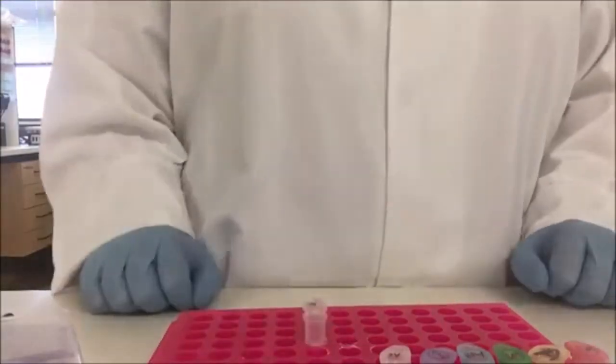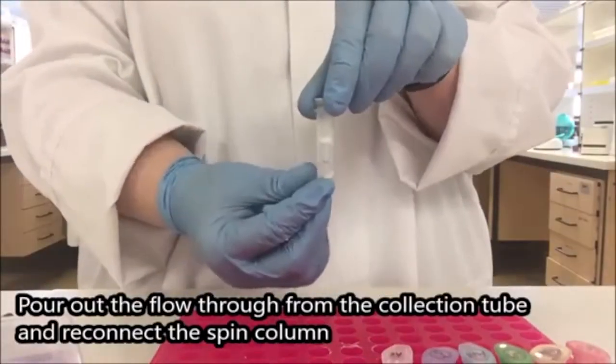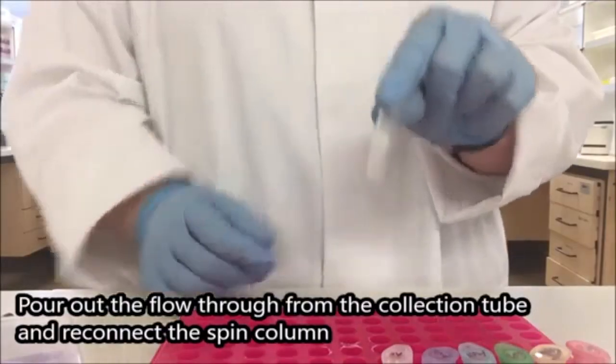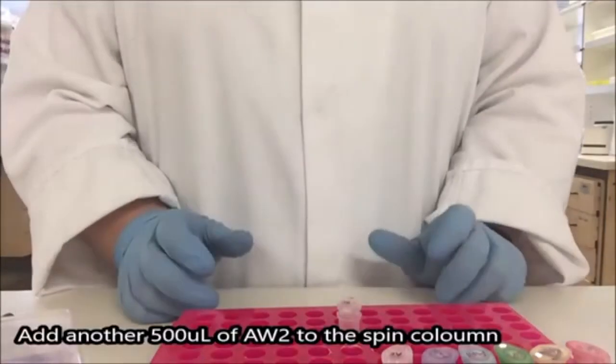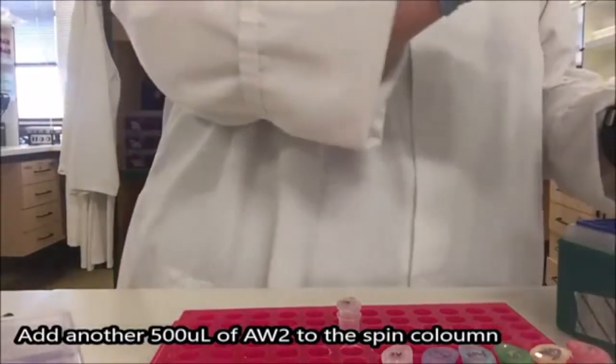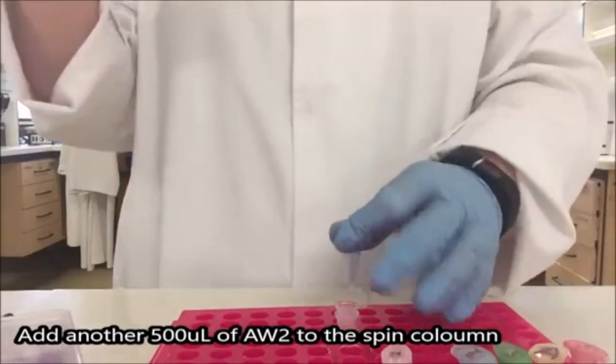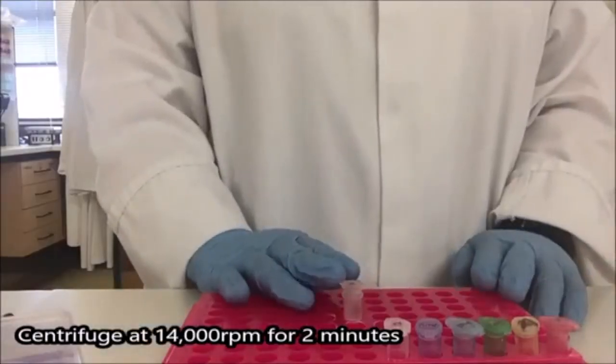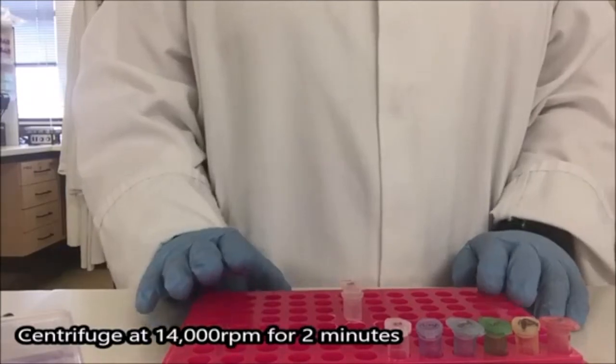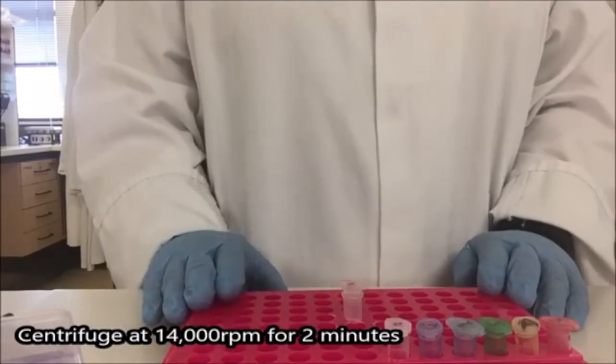I now have that out of the centrifuge. Tip the contents of my collection tube into the waste and connect the top back with the bottom. And I'm going to add a second wash of AW2. Again, 500 mcl. This second wash with AW2, we're going to centrifuge at a higher speed. So we're going to do 14000 rpm for two minutes.